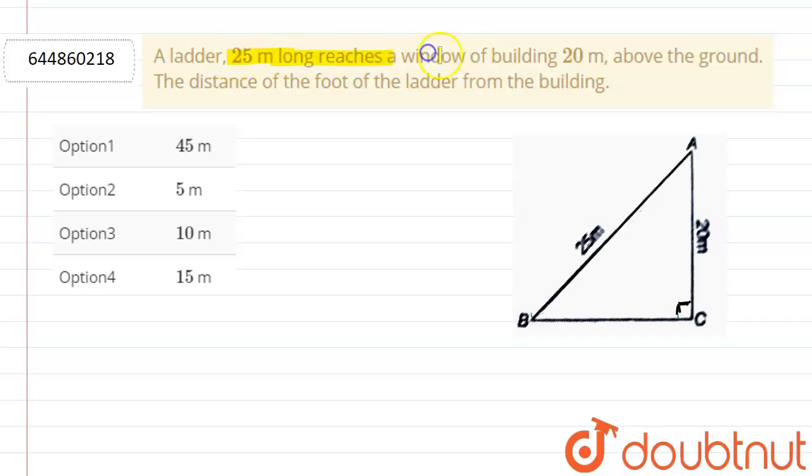A ladder 25 meters long reaches a window of a building 20 meters above the ground. The distance of the foot of the ladder from the building we have to find. So now, suppose this is AC, the